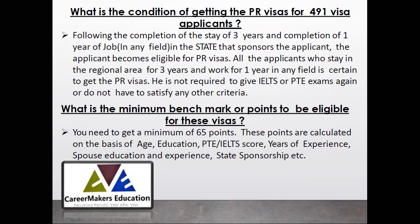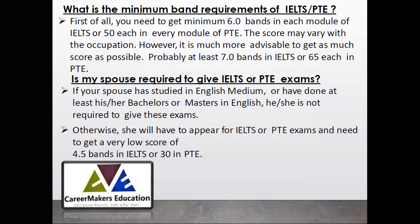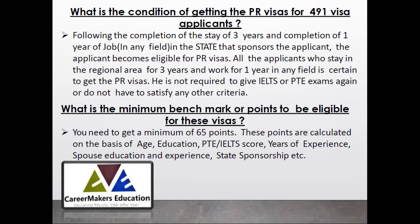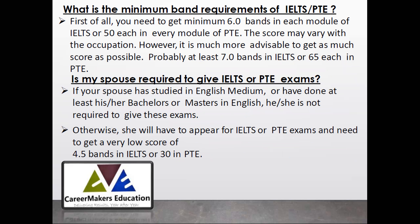Subclass 491 is also a very good visa. If you are not able to get enough points for 189 or 190, then 491 is the best option. In 491, you can work full time and your spouse can also work full time. For all three visas — 189, 190, and 491 — the requirement is 65 points, coming from age, education, PTE/IELTS score, years of experience, spouse education, and state sponsorship.